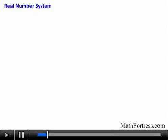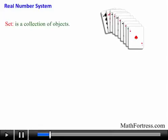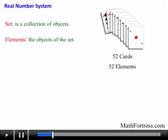Mathematicians like to place objects with similar properties in sets. A set is a collection of objects. For example, a set of a standard deck of cards contains 52 cards. Each of those cards or objects of the set are called the elements of the set. So a standard deck of cards contains 52 elements. Sets are denoted by placing braces around the elements in the set.